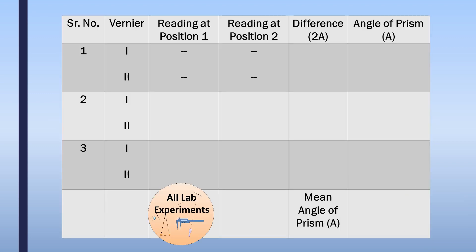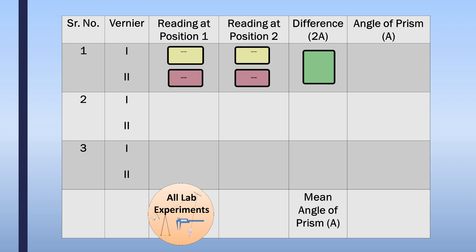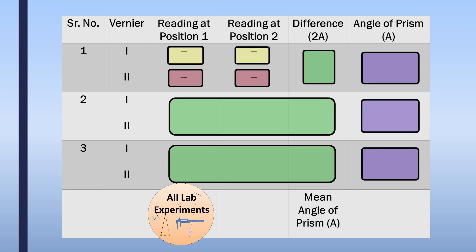We record the readings from vernier scale one and vernier scale two for both telescope positions one and two in a table. We subtract the lower value from the higher value to get 2A — double the angle of prism — and divide by two to get the angle of prism. For better accuracy, we repeat this two more times and take the mean of all readings.